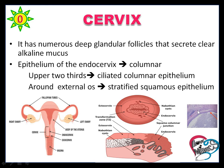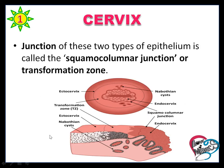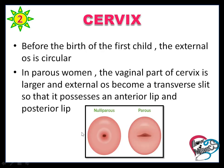The cervix has numerous deep glandular follicles that secrete alkaline mucus. The epithelium of the endocervix is columnar epithelium, and the upper two-thirds is made up of ciliated columnar epithelium. Around the external os, stratified squamous epithelium is present. The junction of these two types of epithelium is called the squamocolumnar junction, that is the transformation zone. Before the birth of the first child, the external os is circular. In a parous woman — meaning she has given birth — by normal vaginal delivery, the vaginal part of the cervix is larger and the external os becomes a transverse slit with an anterior lip and a posterior lip.